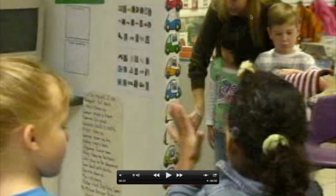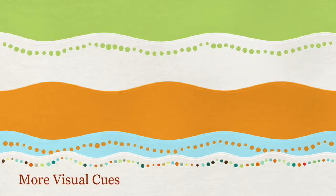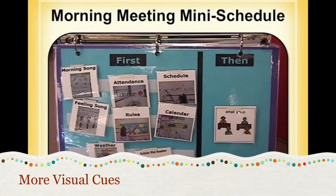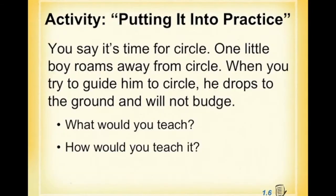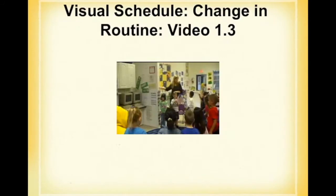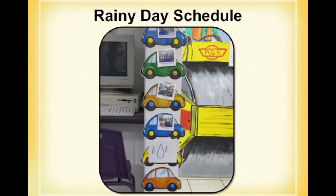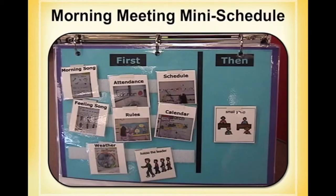Here's another morning meeting mini schedule that helps children see what comes first and then what's going to happen after that. And this is a rainy day schedule — she puts up the rainy day indicator on one of the cards to show that it's going to be a changed schedule, helping to prepare children ahead of time for a change.